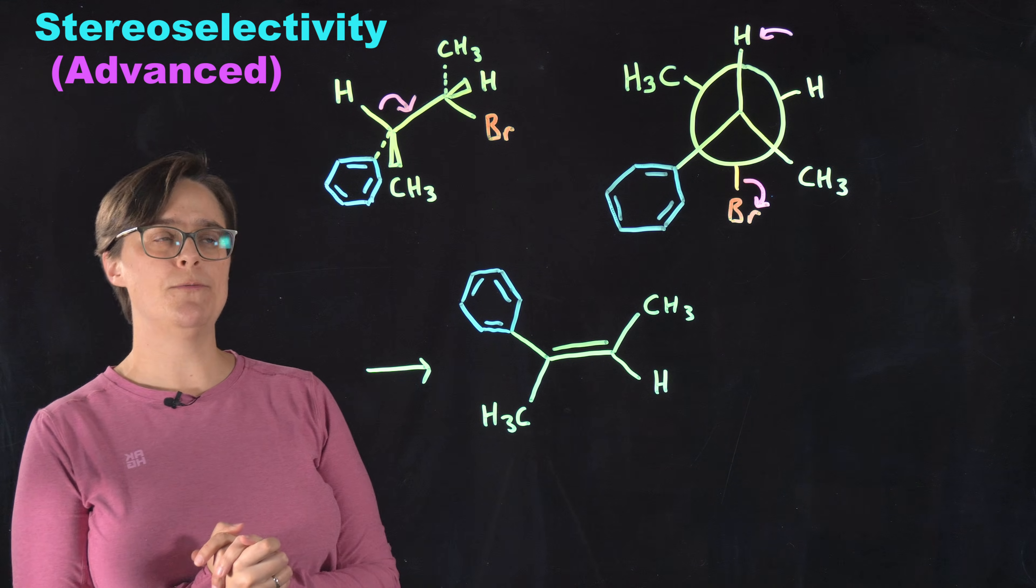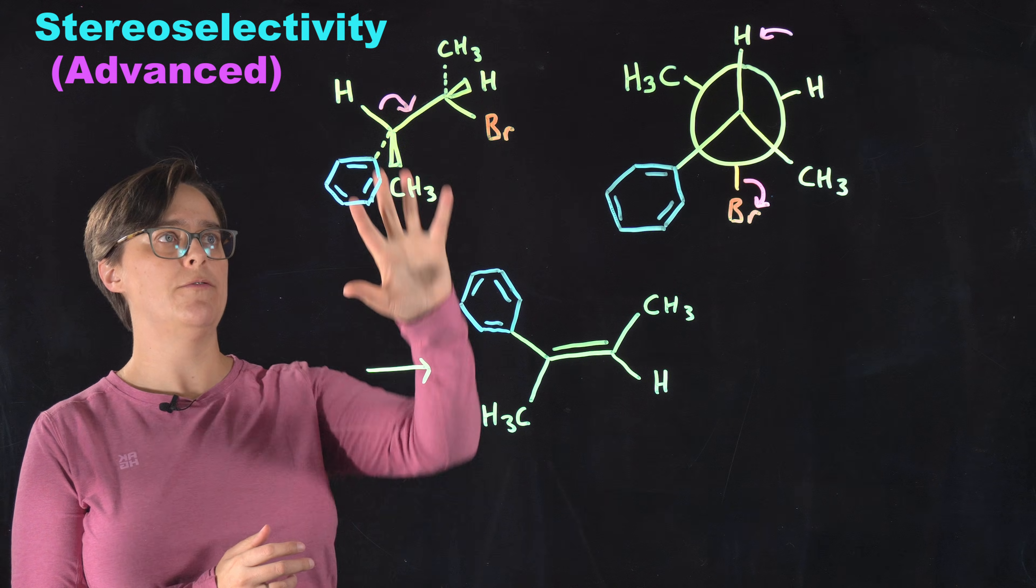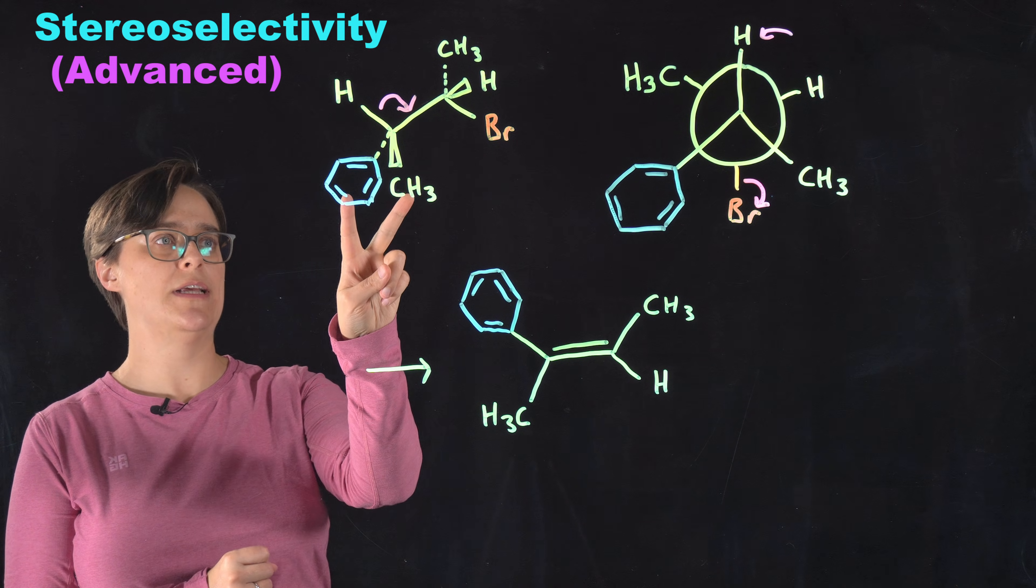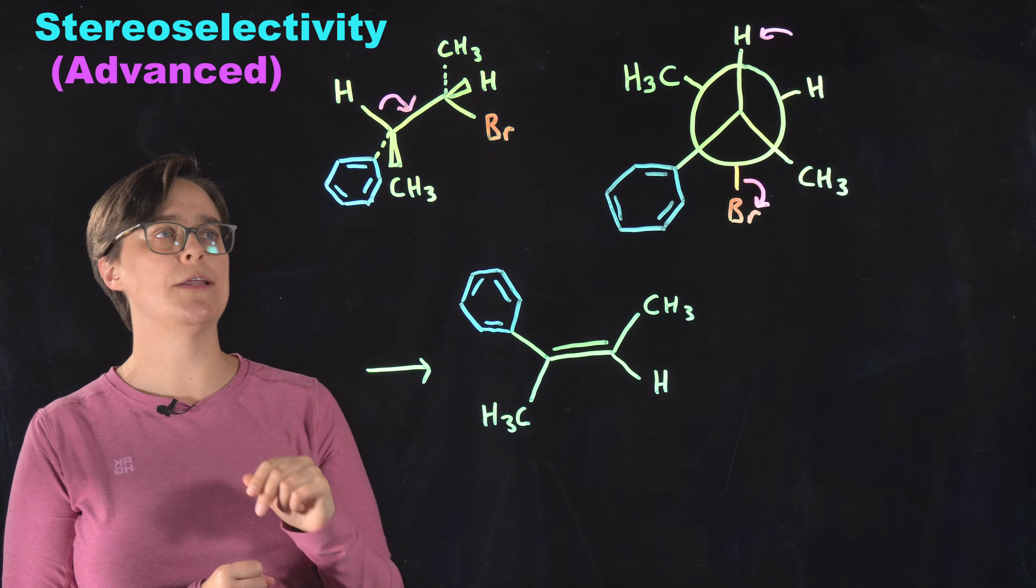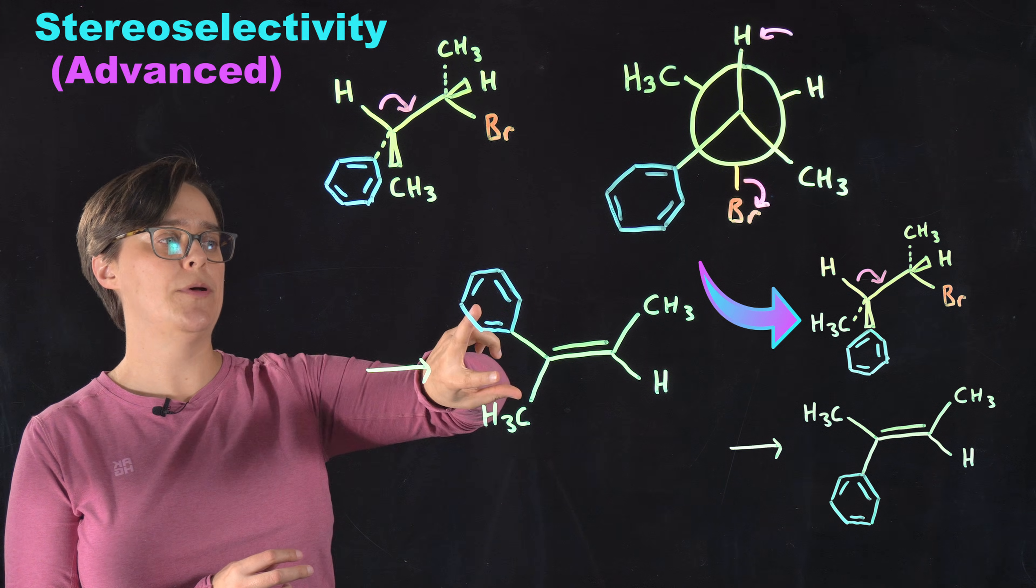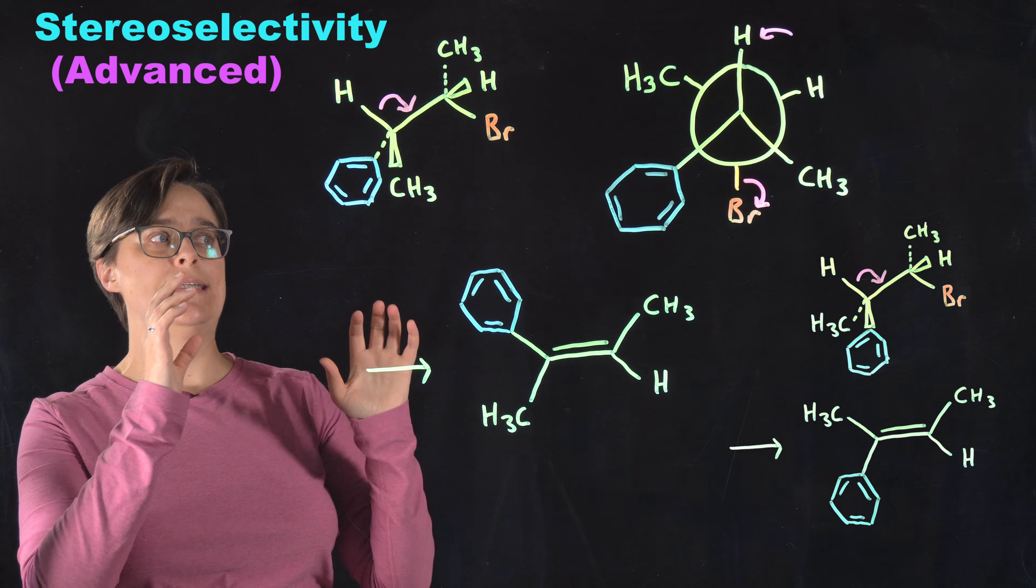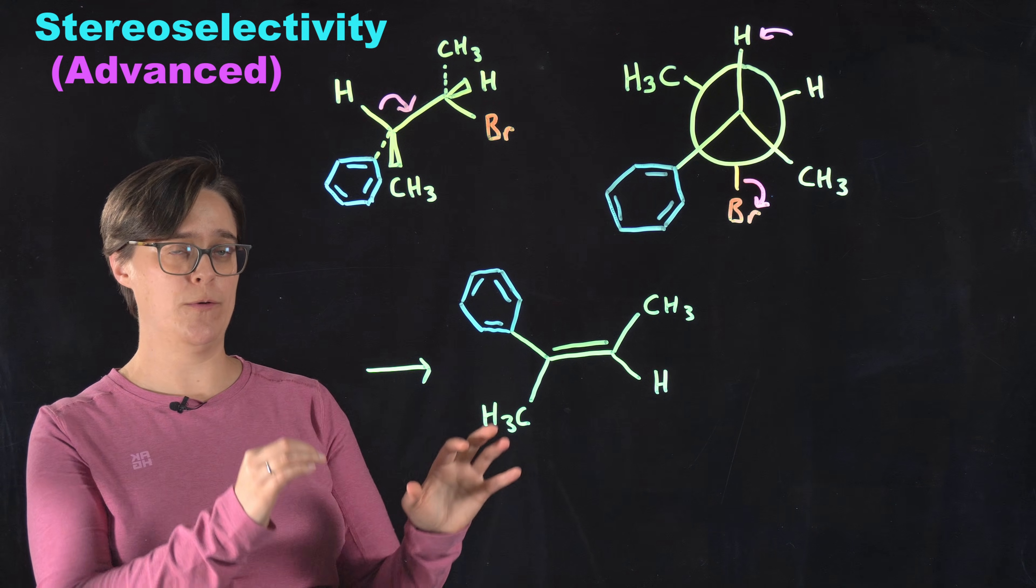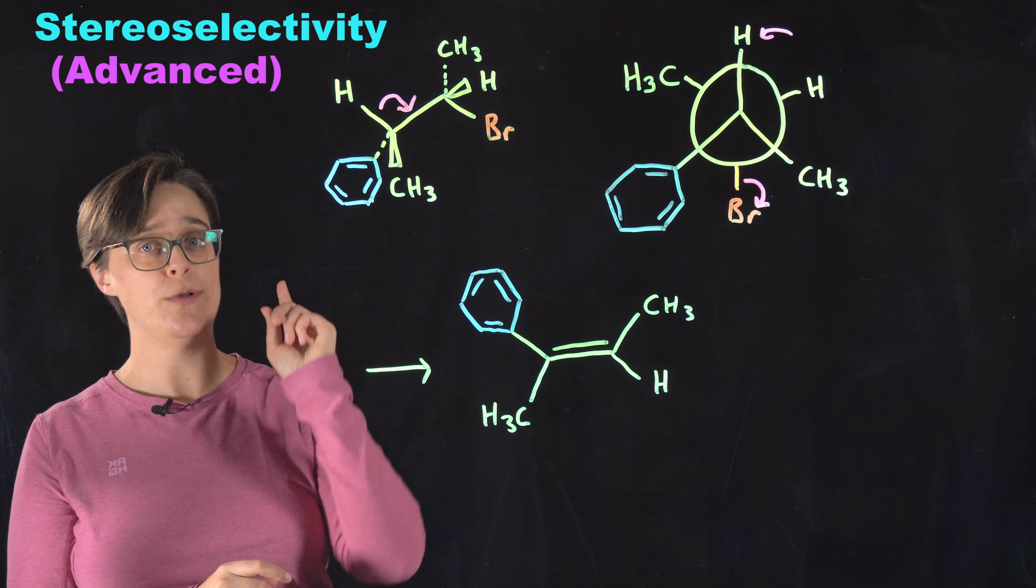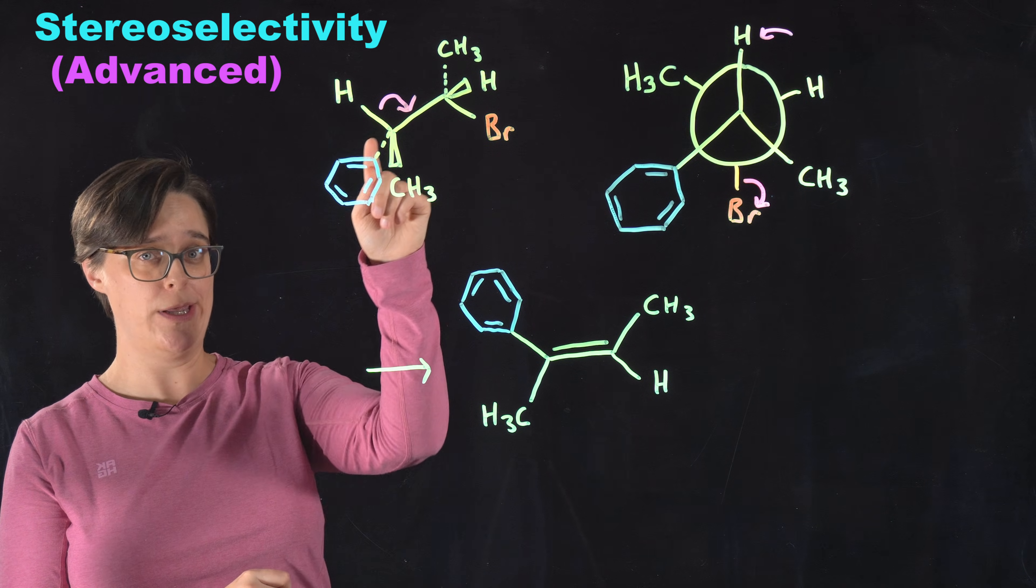Now, imagine what would happen if this was a different isomer. Just flip this phenyl group and this methyl group. You would actually end up getting the trans product. So you really need to be careful with situations in which you only have one hydrogen on that beta carbon.